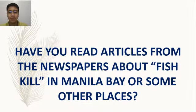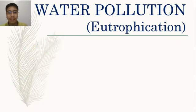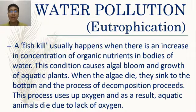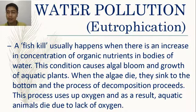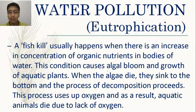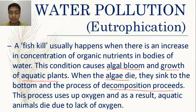Have you read about fish kills in Manila Bay? A fish kill usually happens when there is an increased concentration of organic nutrients in bodies of water. Surface runoff washes nutrients into stagnant bodies of water like lakes, causing an algal bloom and growth of aquatic plants. The decomposition process uses up oxygen, and as a result, aquatic animals die due to lack of oxygen.